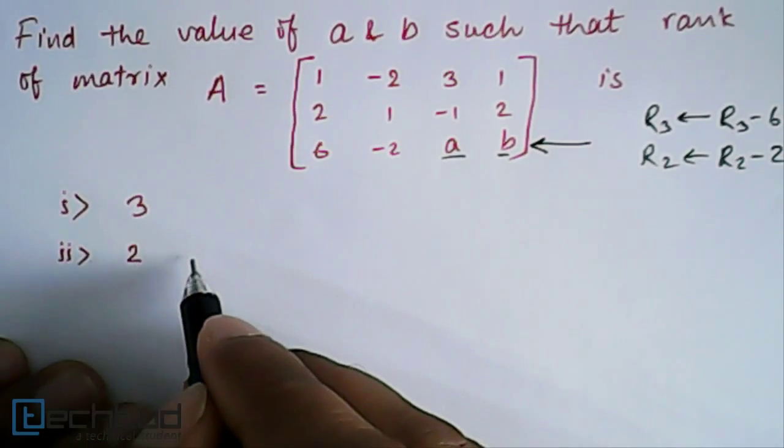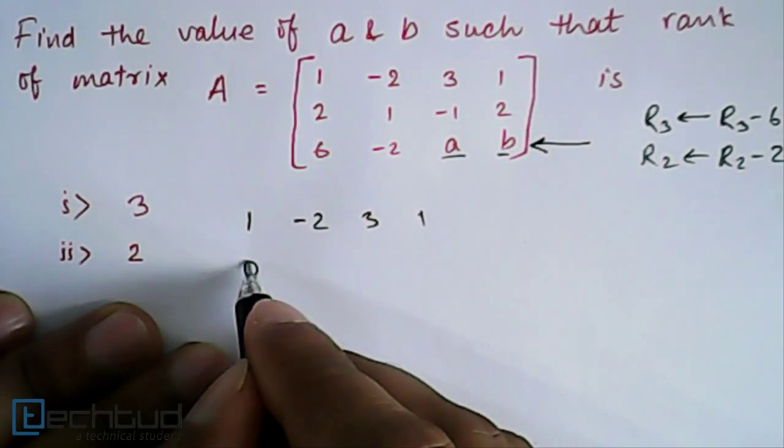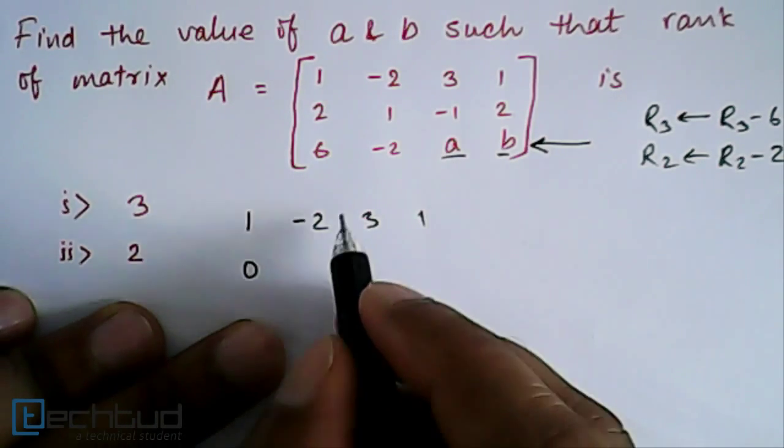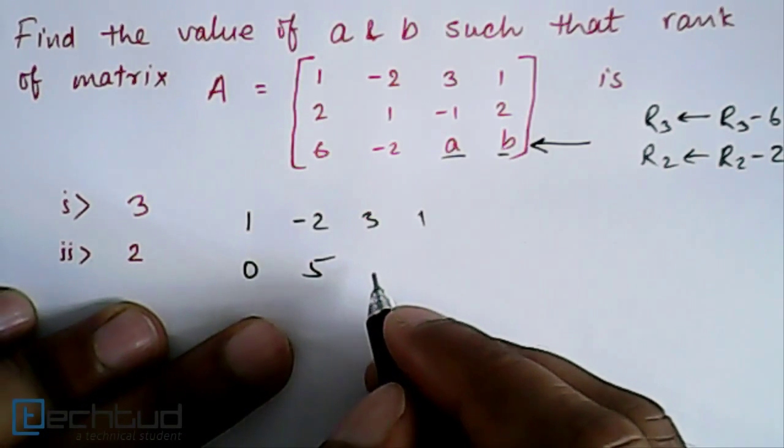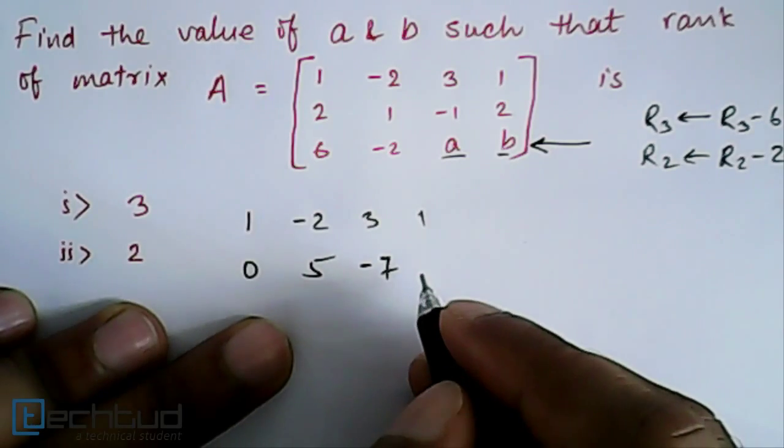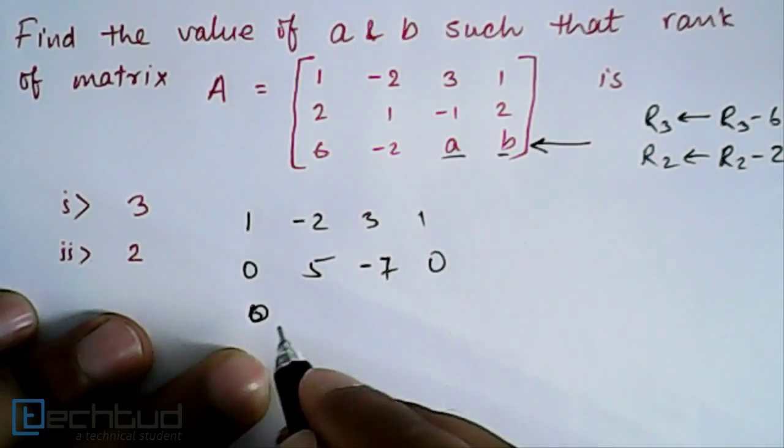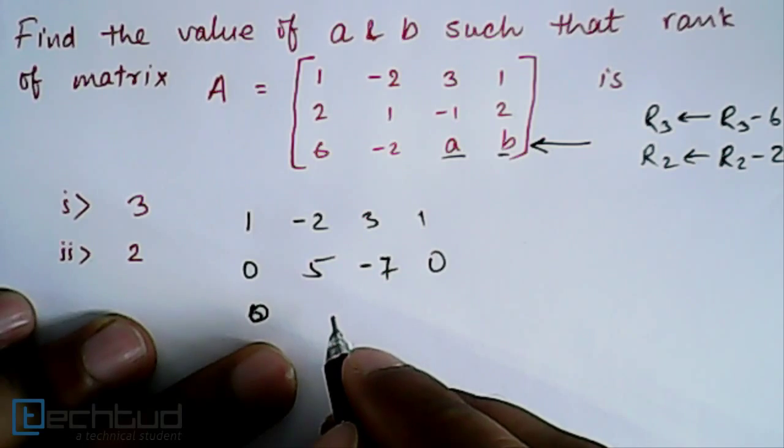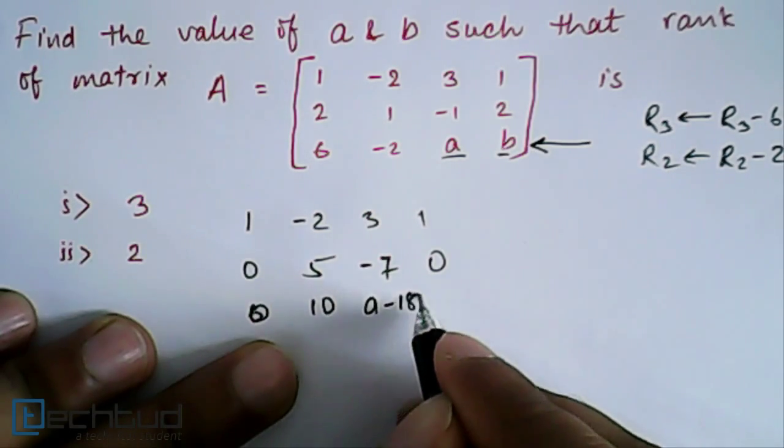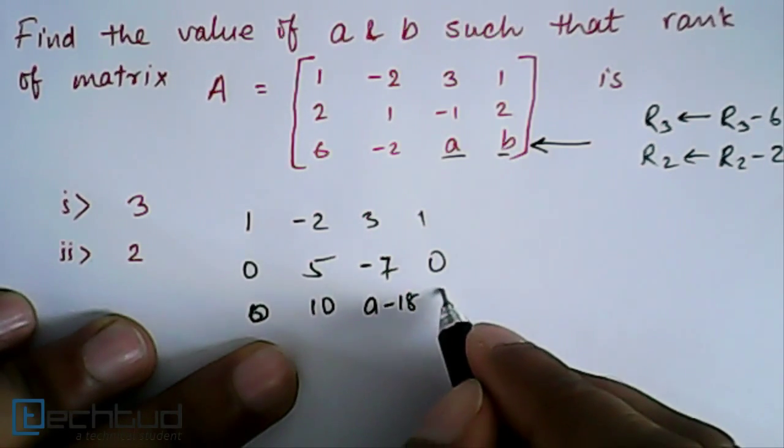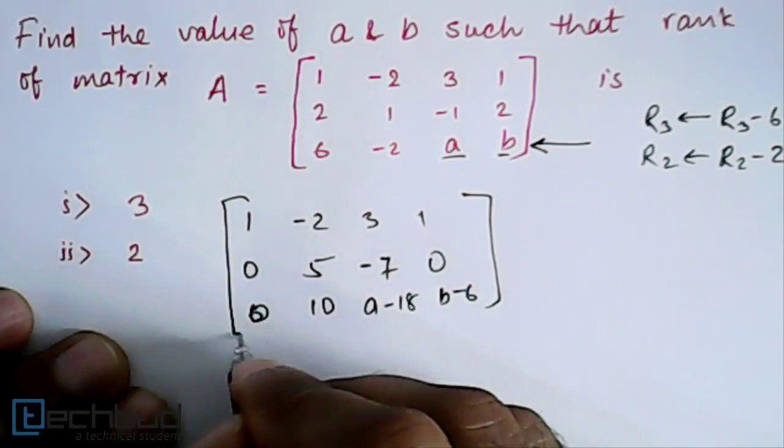After this transformation, the matrix will become: first row will be same 1, -2, 3, 1. Second row becomes 0, 5, -7, 0. For the third row, it becomes 0, 10, a-18, b-6. This is the value.